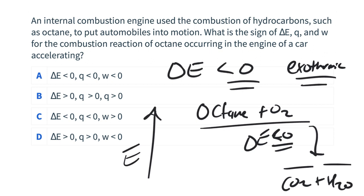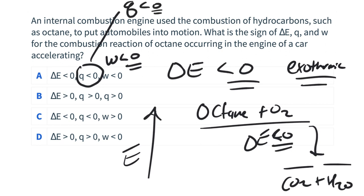What about the sign of Q and W? This is occurring in the engine of a car that's accelerating. The reason accelerating is helpful to know is that the car is being put into motion — some force is being applied over some distance. That means the sign of W has to be less than zero, or negative. Putting an object into motion means the sign of W is negative. It's the same sign as heating up an object, like heating up the engine block. That Q sign is also going to be negative.